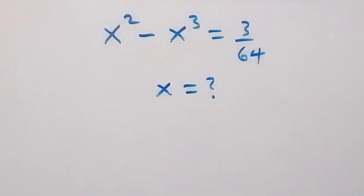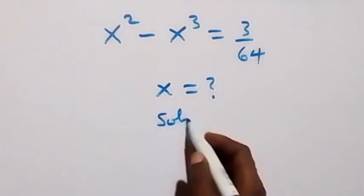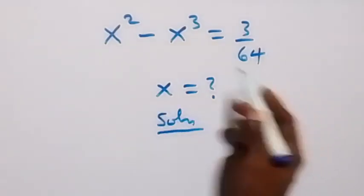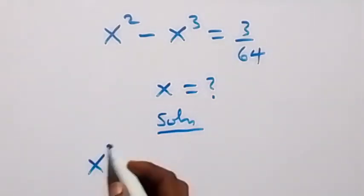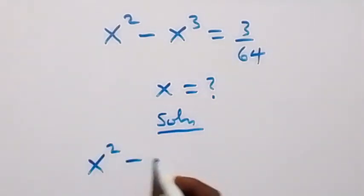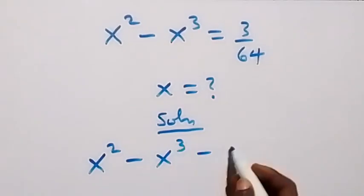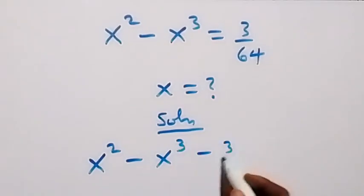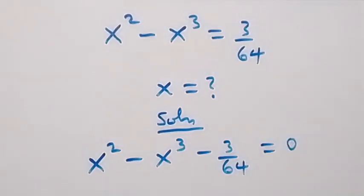Hello, you are welcome. How to solve this nice algebra problem. From here, let's take 3 over 64 to this side, and here we have x squared minus x cubed, and minus 3 over 64 now equals to zero.